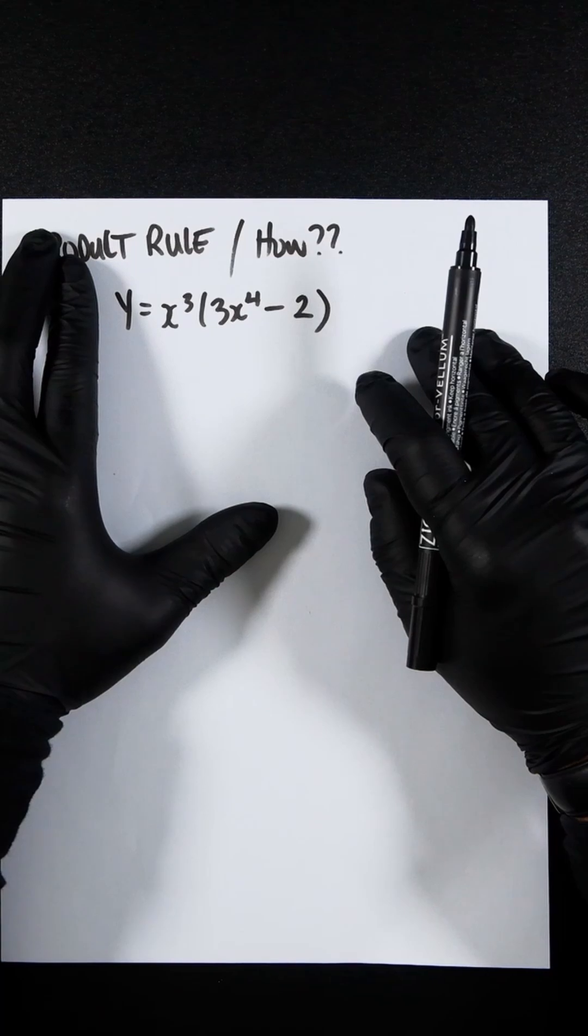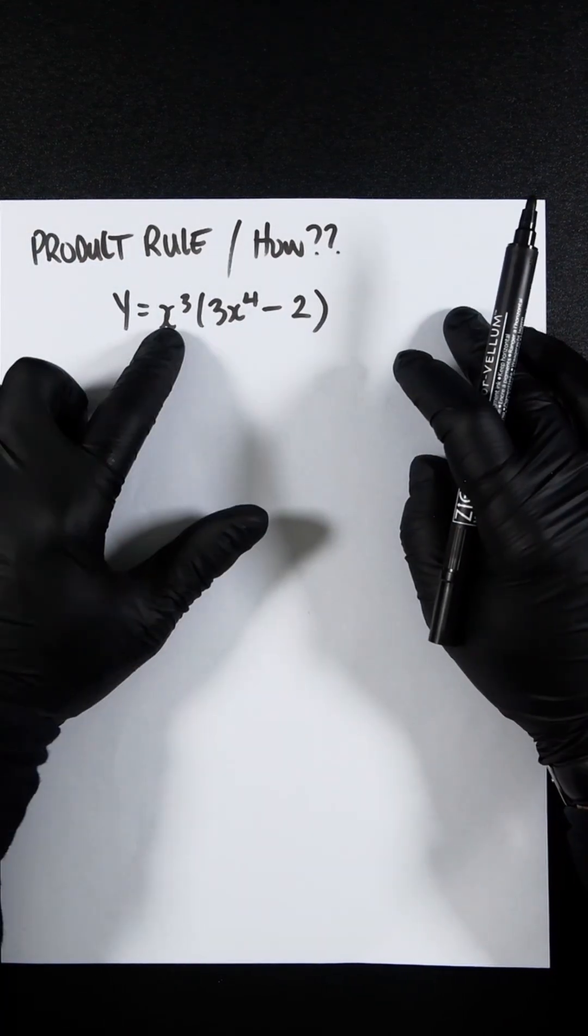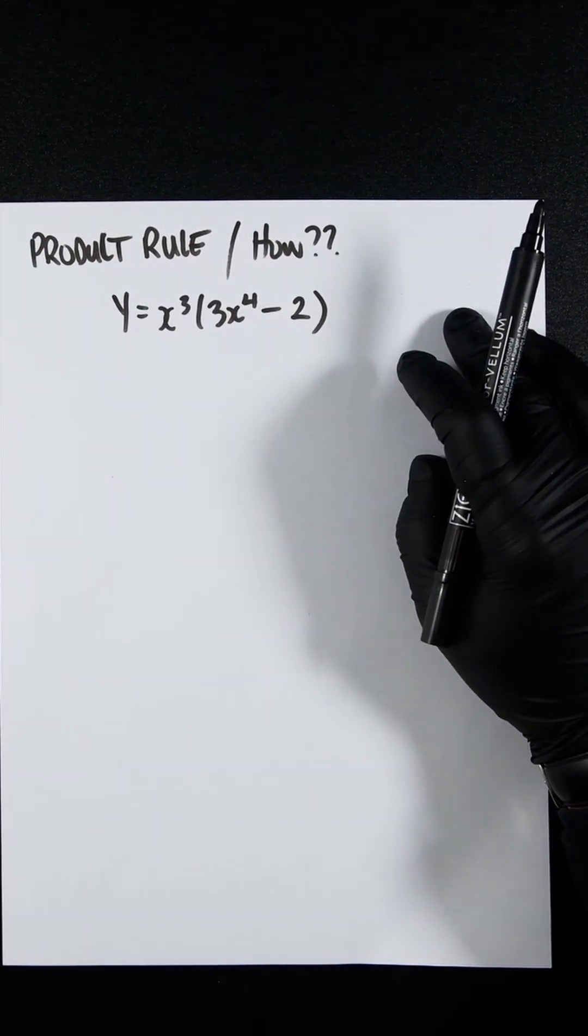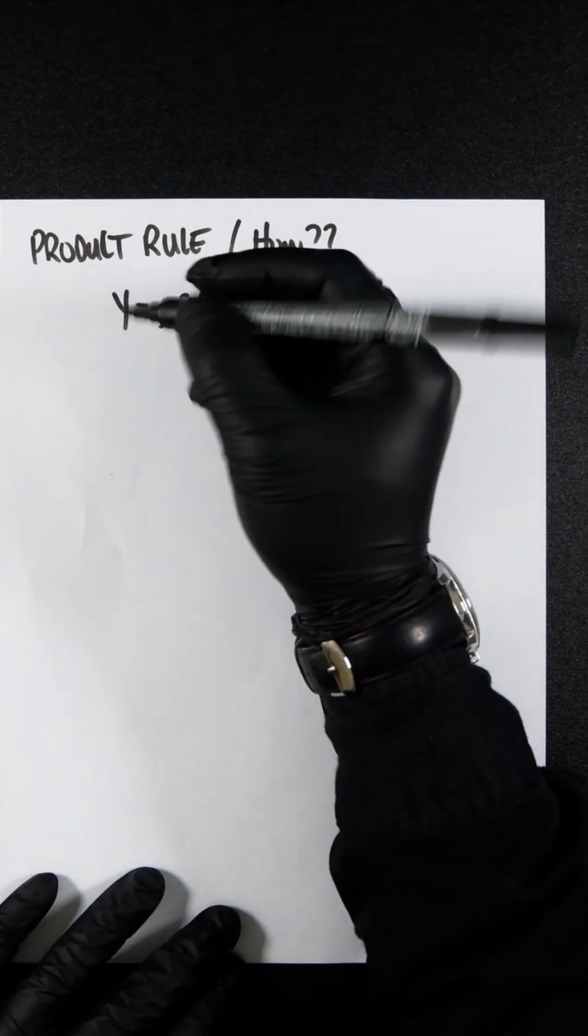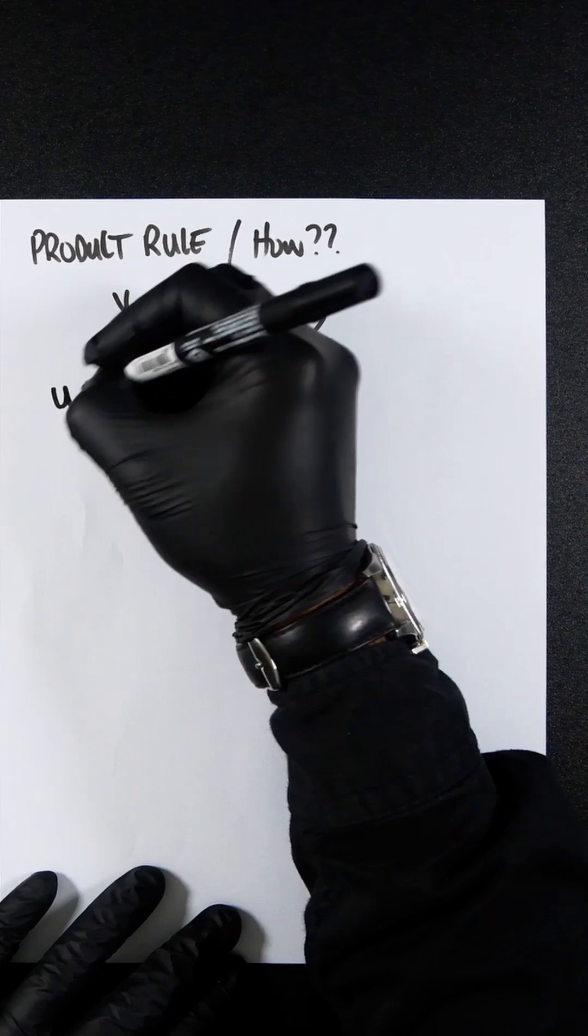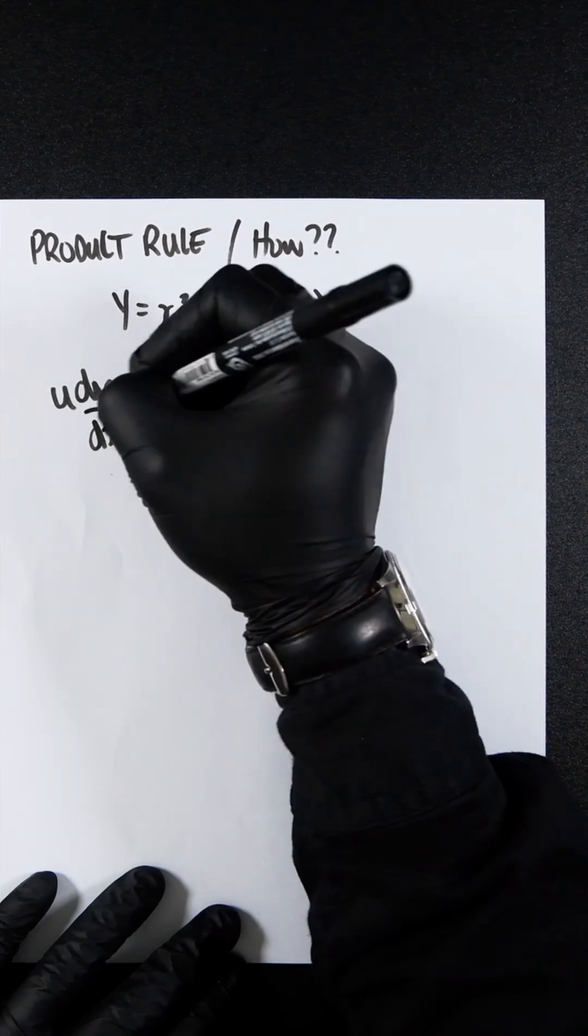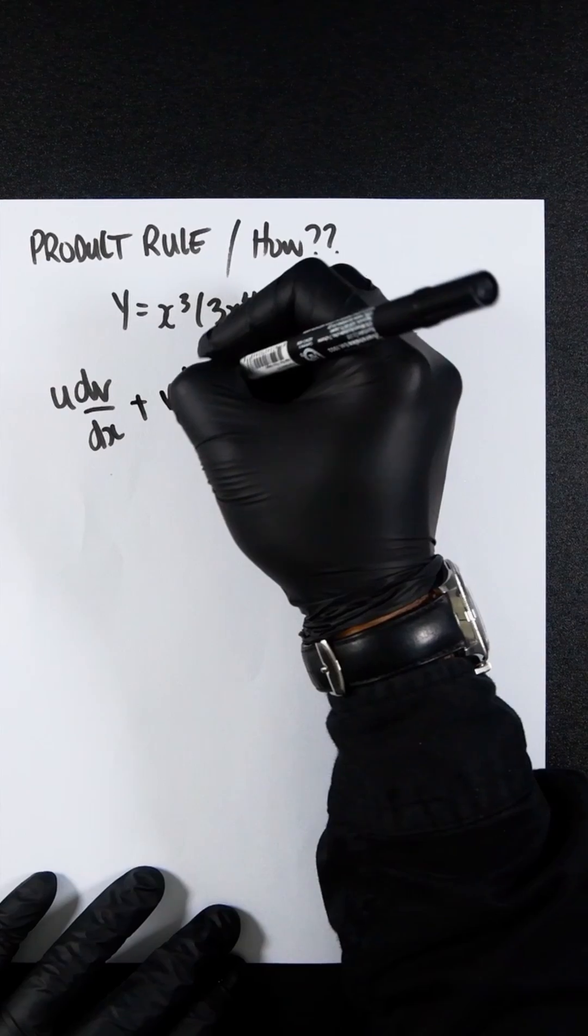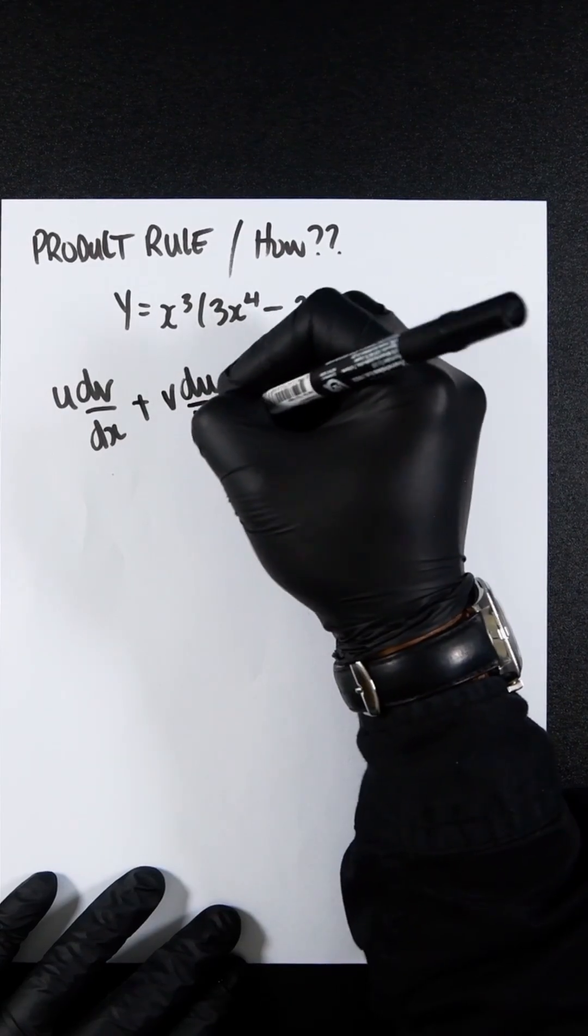However, this equation has two terms, so we need to split them up. To do that, we will use the product rule formula, which is u dv dx plus v du dx.